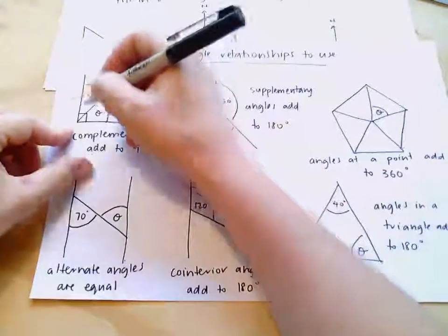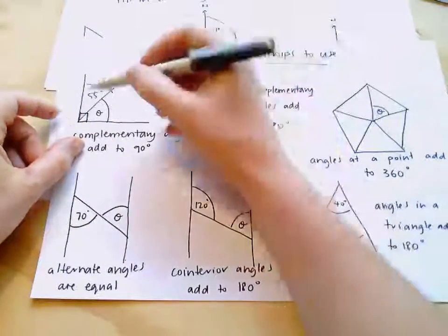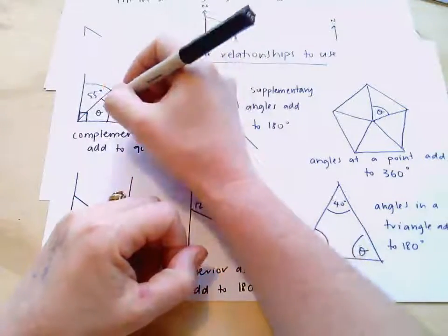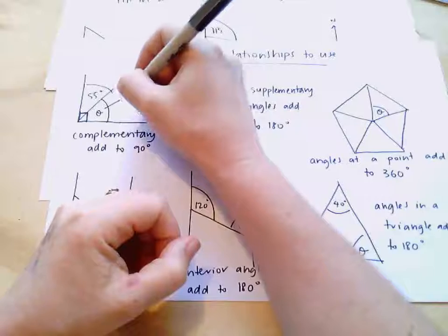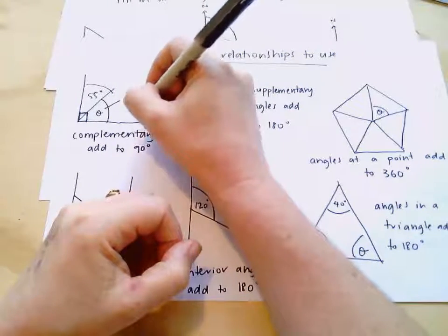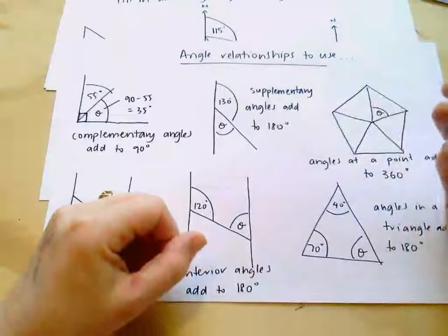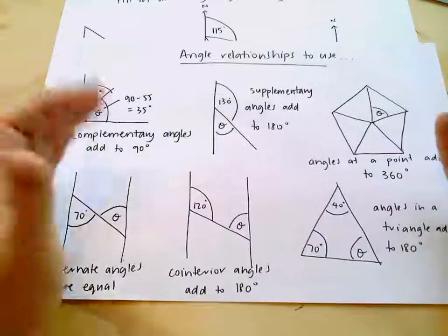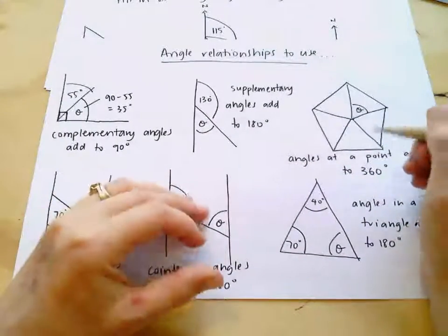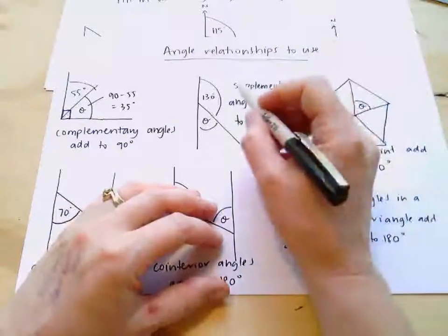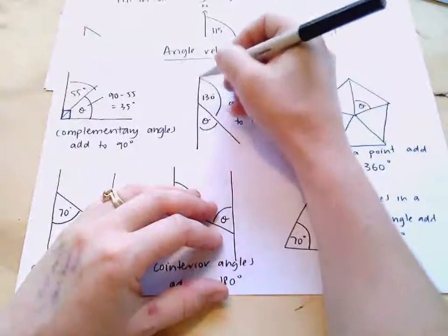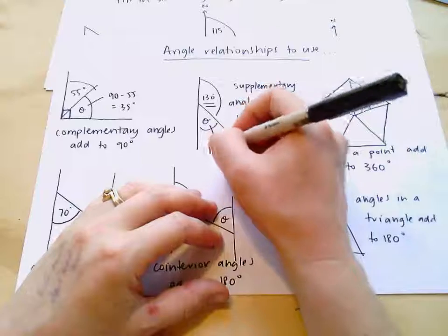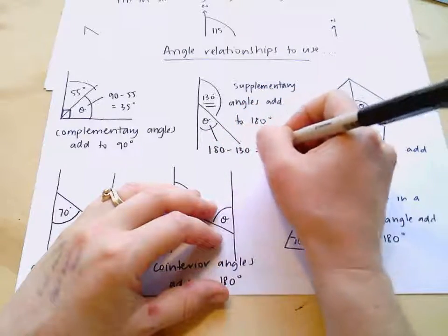Complementary angles add up to 90 degrees. That is two angles or three angles or four angles that form a right angle together add up to 90. So, if this one here is 55, work out what this one must be. It must be 90 minus 55, that's going to be 35 degrees. This next one says supplementary angles add up to 180. Angles on a straight line add up to 180. So, if this one's 130, this one must be 180 minus 130, or 50 degrees.